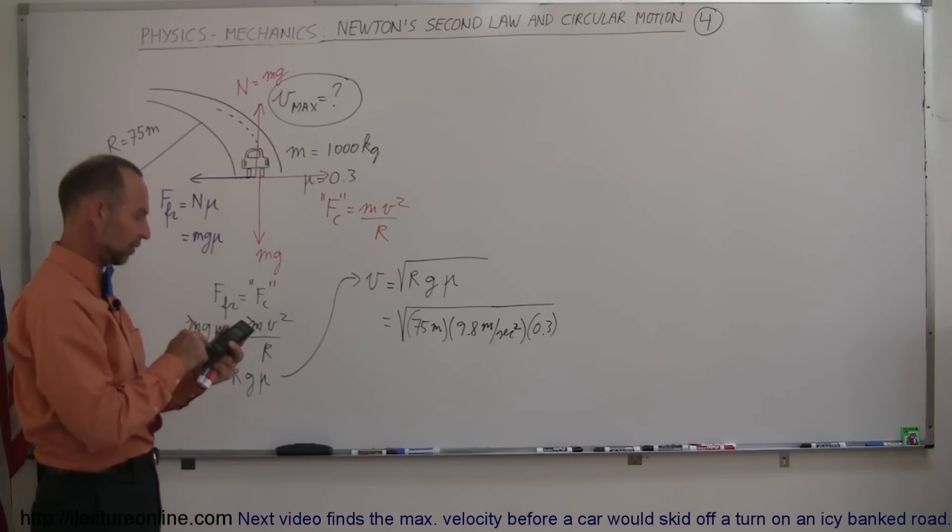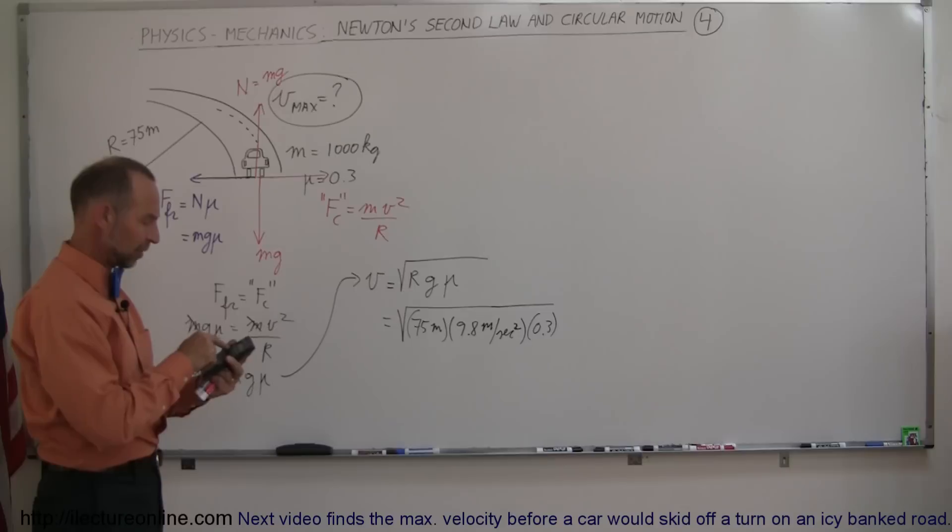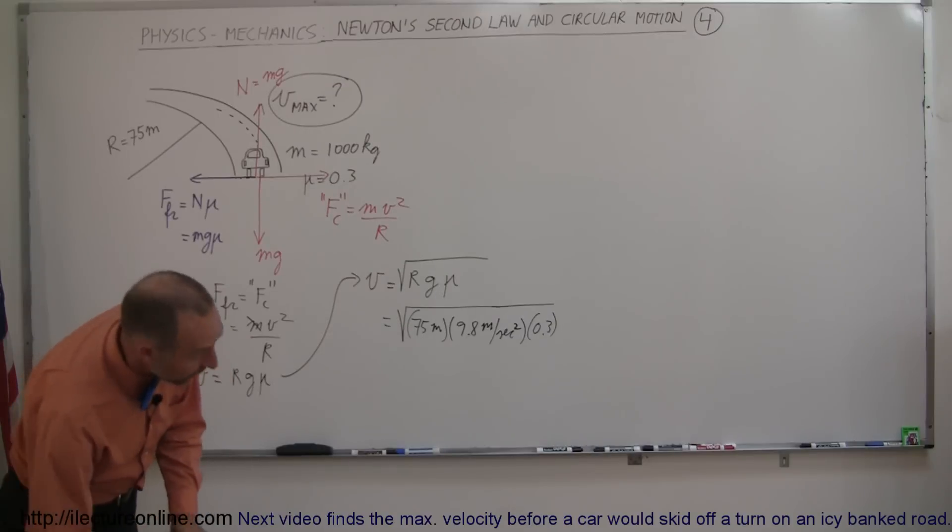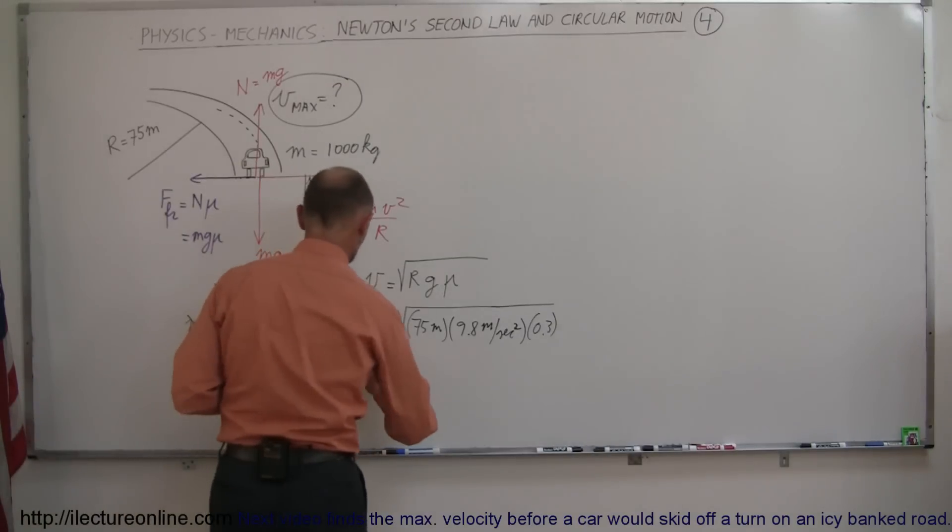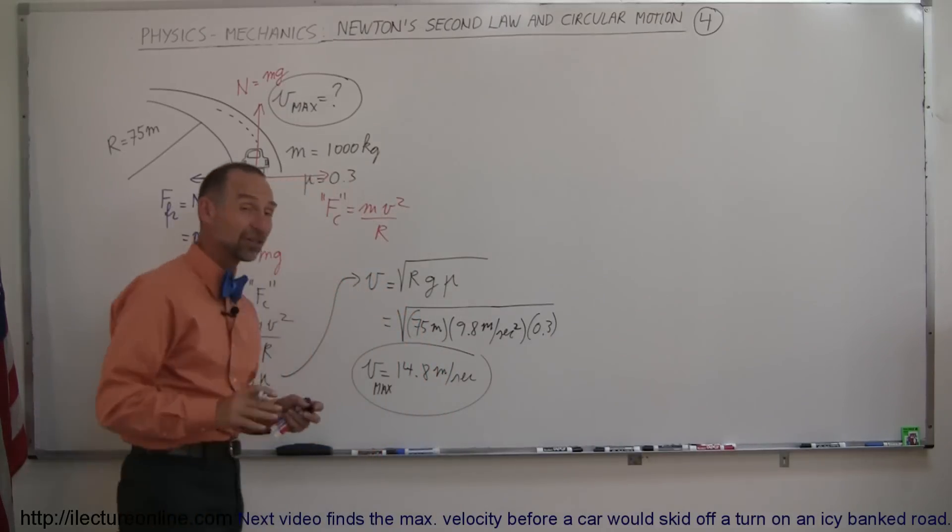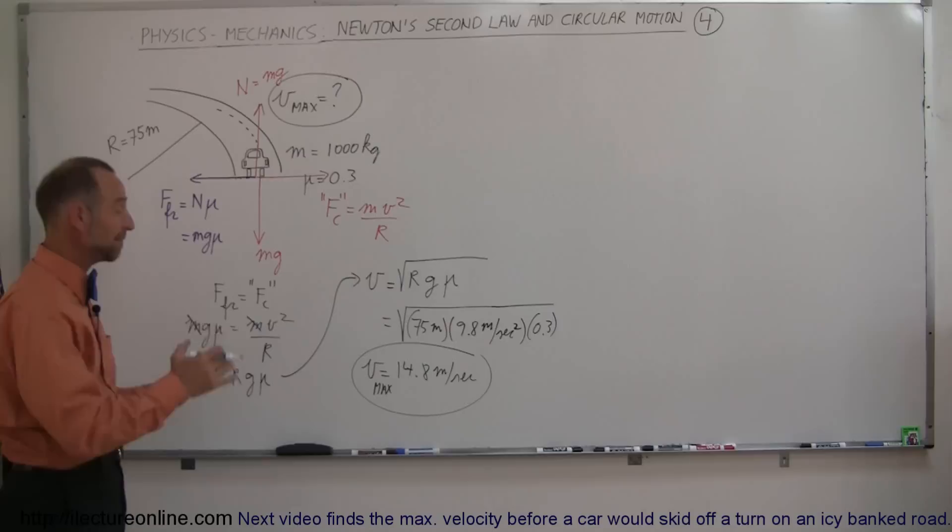Let's find out what that is equal to: 75 times 9.8 times 0.3. Take the square root and 14.85. Let's just call it 14.8 meters per second, which is the maximum velocity the car can have before the friction between the tire and the road can no longer keep it on the road.